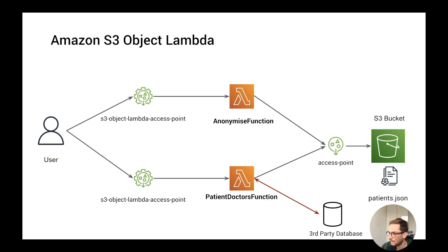We then add an S3 Object Lambda access point, which is the endpoint the user is going to query from the client side. The key change in our application is that the user no longer calls the S3 bucket URL — instead they call the S3 Object Lambda URL. The user calls GetObject on this URL, which triggers the Lambda function. The Lambda function gets the patient.json file, processes it, and returns the result. This is a more scalable and very flexible way to get a custom object based on your use case — and that is what S3 Object Lambda lets you do.